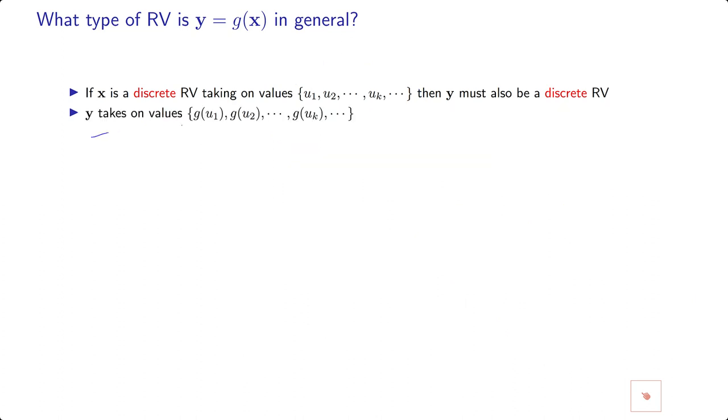Obviously, Y takes values from these sets. Some of these G(Uk) may repeat; for instance, if two are mapped into a single point, then you could have less.